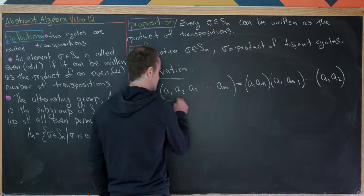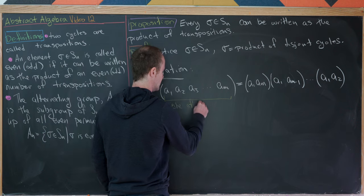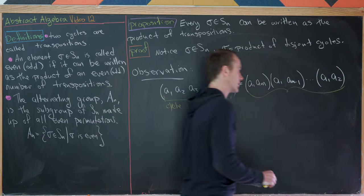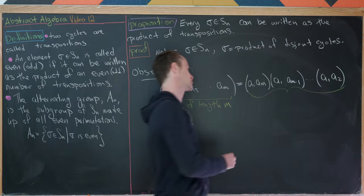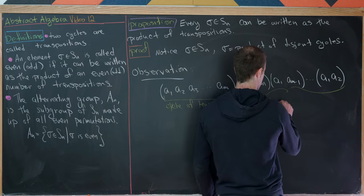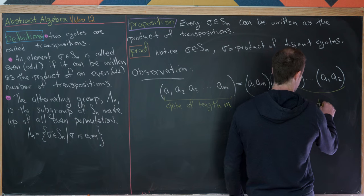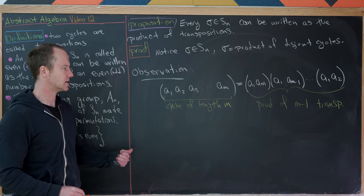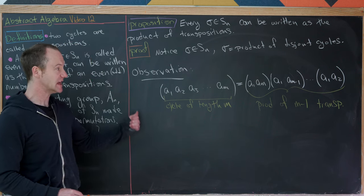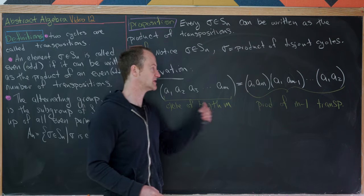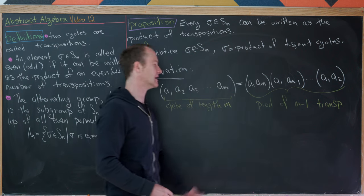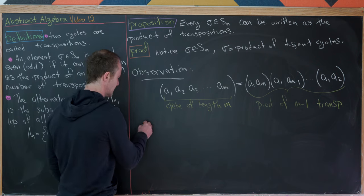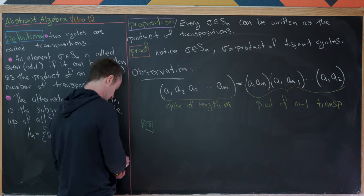A cycle of length M is the product of M minus 1 transpositions. That means a cycle is even if and only if M is odd, because if M minus 1 is even then M is odd. Let's look at a couple of quick examples to build intuition.